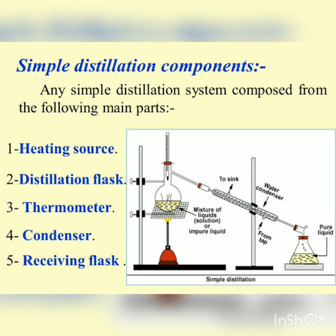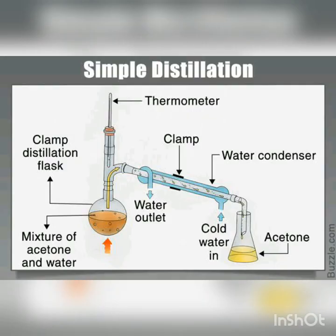Now let's discuss the apparatus used in simple distillation. We need a heating source, which can be a flame, and a distillation flask — a round-bottom flask in which we place the mixture of two liquids. We also need a thermometer to check the temperature, a condenser pipe to cool the vapors formed after heating, and a receiving flask in which the pure liquid is collected and separated.